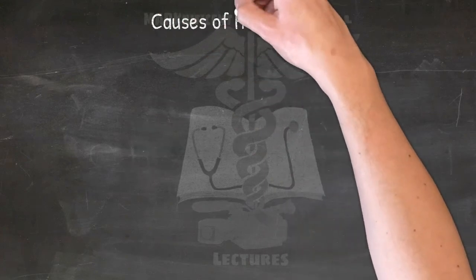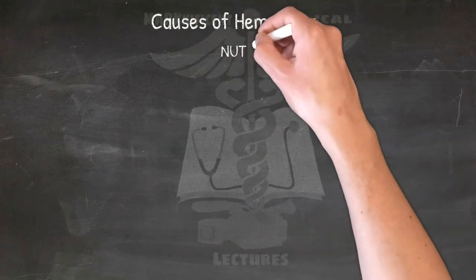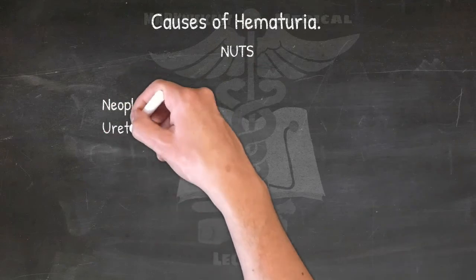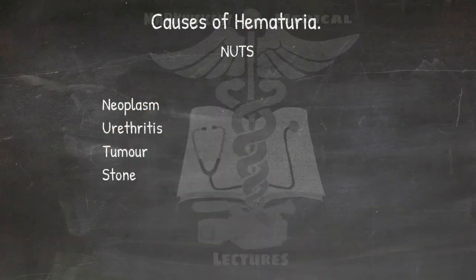Urethral causes of hematuria: NUTS — Neoplasm, Urethritis, Tumor, and Stone.